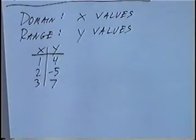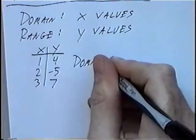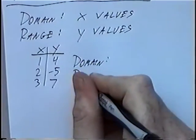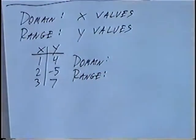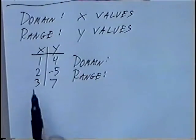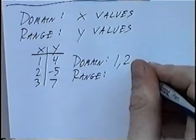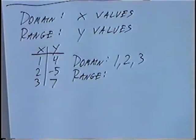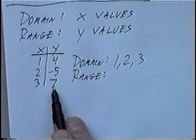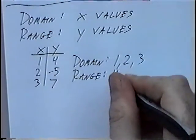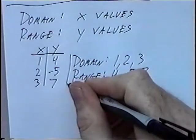Looking at the t-chart or the table, we can determine the domain and also the range. The domain is a list of the X-values. X-values in this case are 1, 2, 3 — so the domain would be 1, 2, 3. And likewise the range — the Y-values are 4, negative 5, and 7, so the range would be 4, negative 5, and 7.